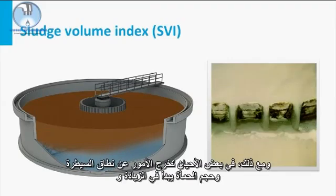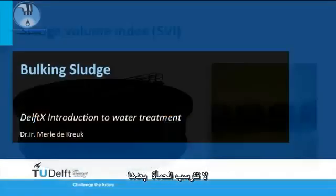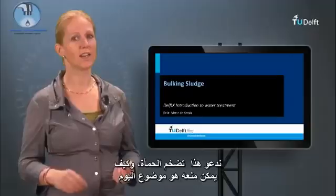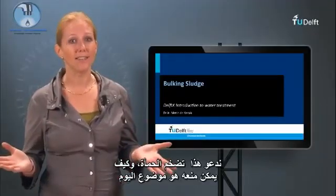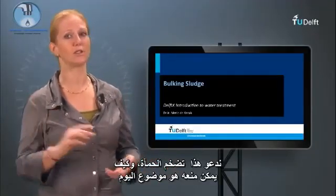However, sometimes things get out of hand — the sludge volume starts increasing and the sludge will not settle anymore. We call that bulking sludge, and how that can be prevented is today's topic.